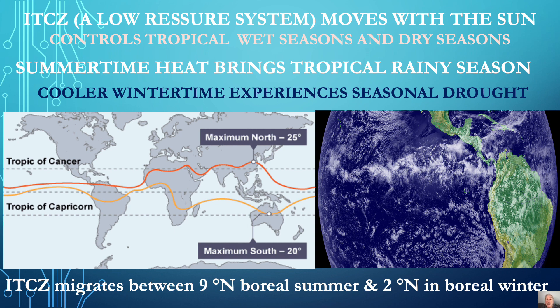In the southern hemisphere's summer, the ITCZ then moves southward — as seen in orange — while regions north of the equator experience seasonal drought. On average, the ITCZ migrates between 9 degrees north and 2 degrees north over the Pacific and Atlantic oceans, but it migrates much further north and south over Asia and Africa, because land masses heat up much faster than the ocean.